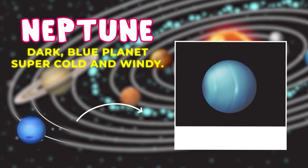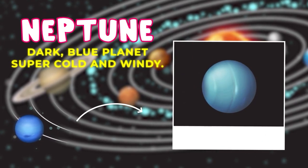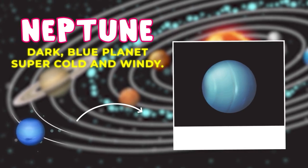Neptune is a dark blue planet that's really far away. It's super cold and windy out there.